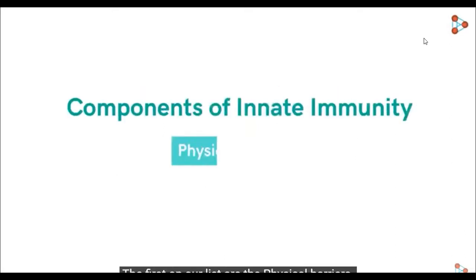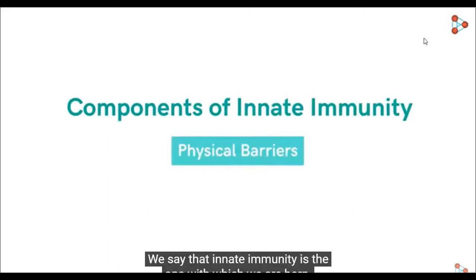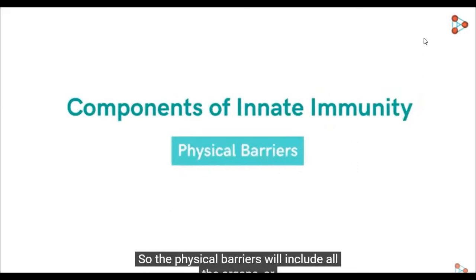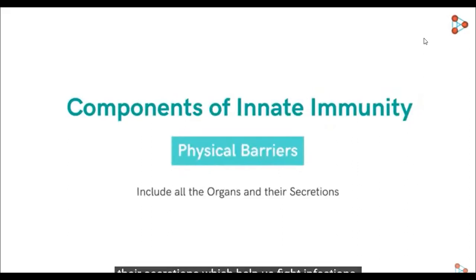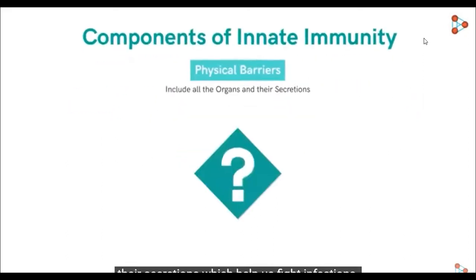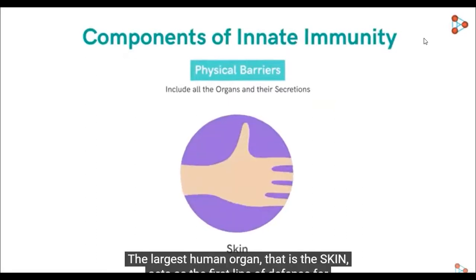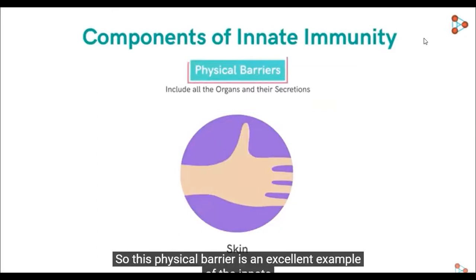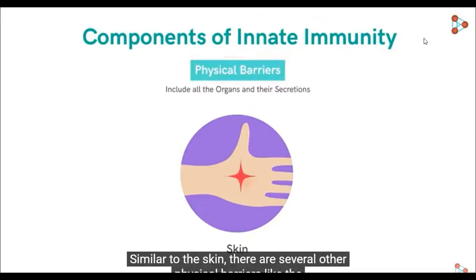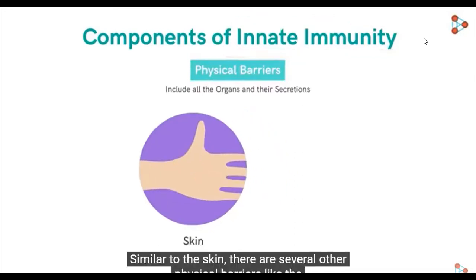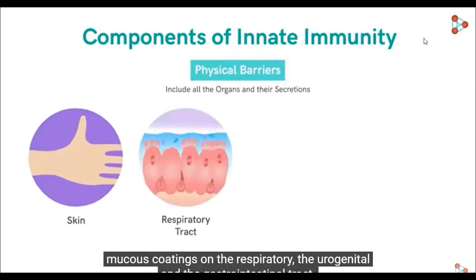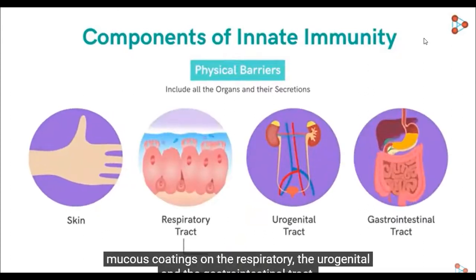The first components are the physical barriers. The physical barriers begin through the immune organs. The largest organ of the human body is the skin, which acts as the first level of defense. So this is an excellent example of innate immunity. Similar to the skin, there are several other physical barriers, like the mucosa on the respiratory tract, the urogenital tract, and the skin that traps pathogens.